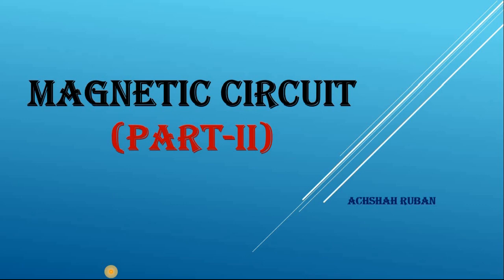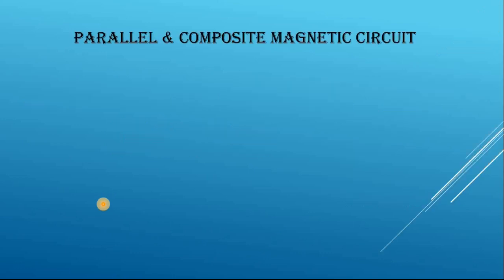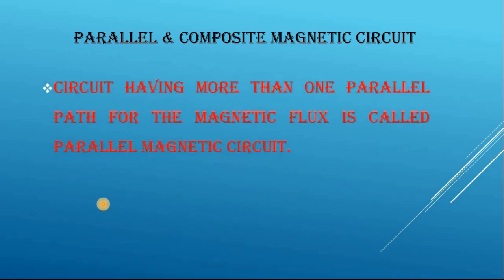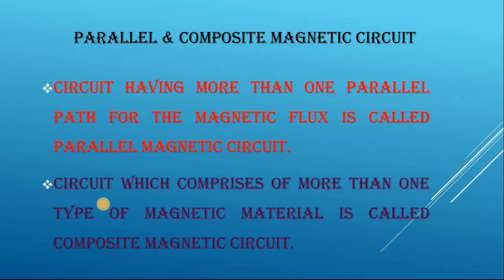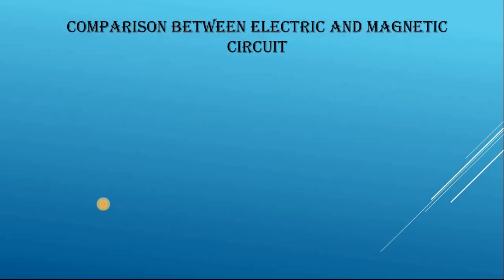Hey everyone, welcome back to my channel, this is Aksha Roban. In today's video we'll be discussing about magnetic circuit — it's part two of magnetic circuit. First we'll be discussing about parallel magnetic circuit and composite magnetic circuit. A circuit having more than one parallel path for the magnetic flux is called a parallel magnetic circuit. A circuit which comprises of more than one type of magnetic material is called a composite magnetic circuit.